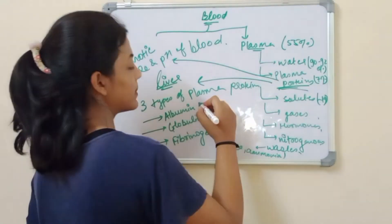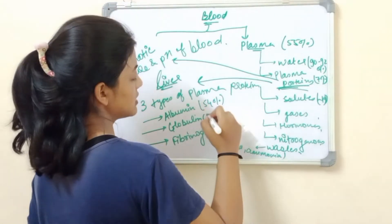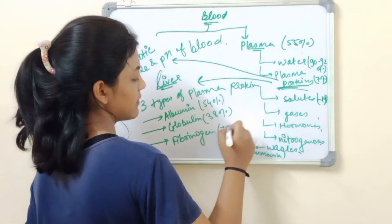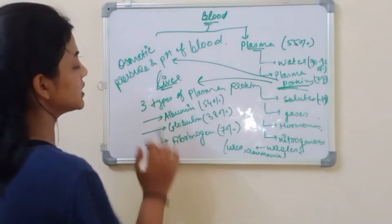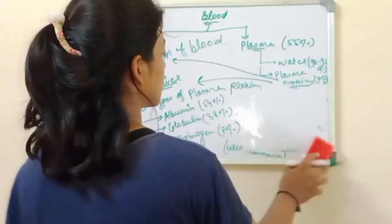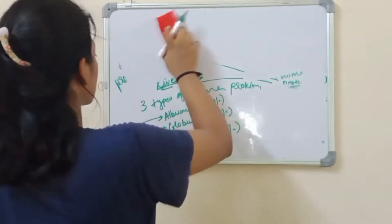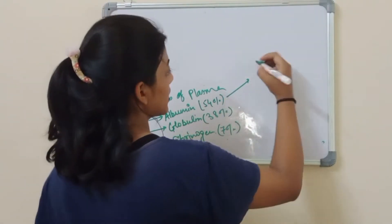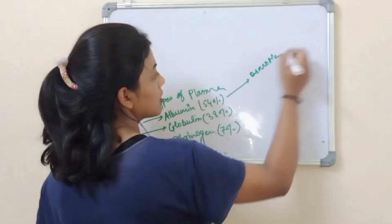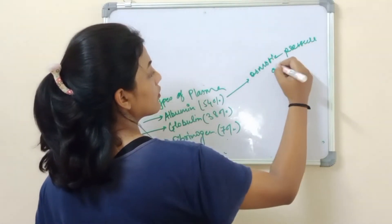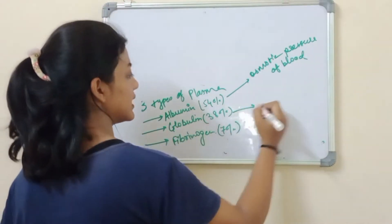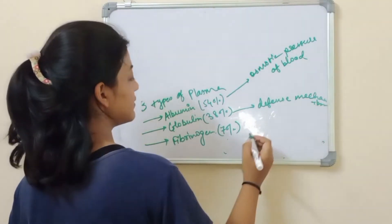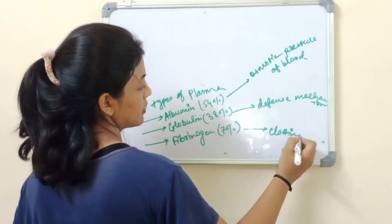Albumin is present at 54%, globulin at 38%, and fibrinogen at about 7%.